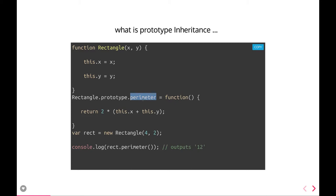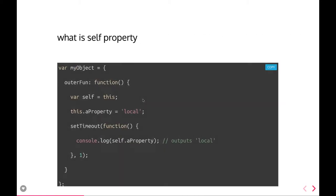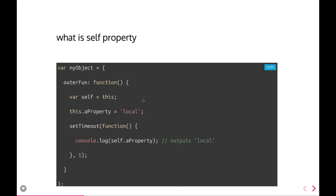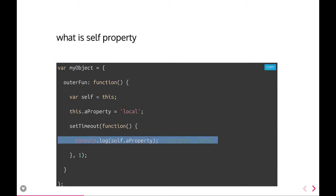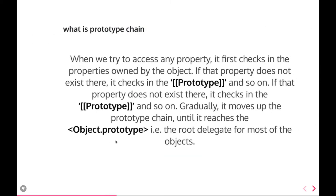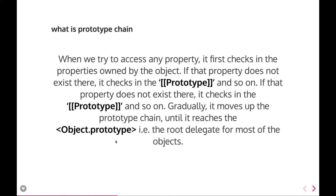These prototype methods can also be inherited by another function if that function is inheriting the function's prototype. What is the 'self' property? This is just a workaround we use in ES5 to provide the 'this' scope inside a nested function. If you have an outer function with a setTimeout inside, 'this' is available in the outer function, but to access it inside the nested function you need to assign it to a variable first.